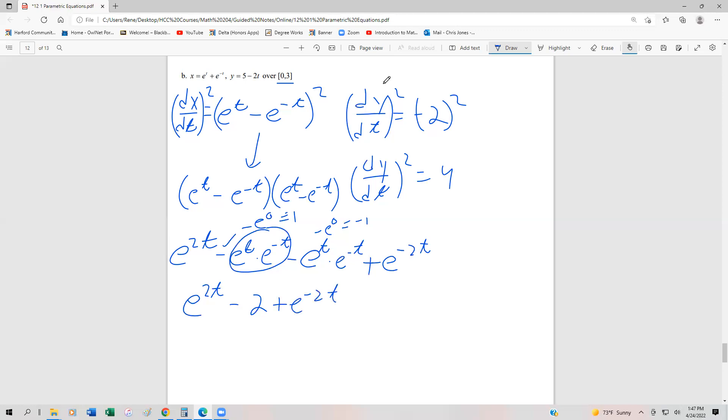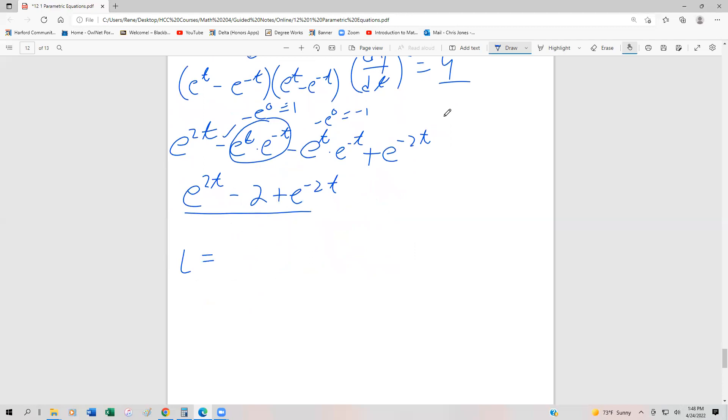Now we're going to substitute this, as well as the 4, back underneath of our radical for our length. So remember, arc length is the integral from, in this case, 0 to 3. We're going to have √(e^(2t) - 2 + e^(-2t) + 4) dt.